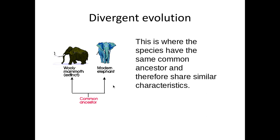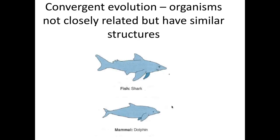We have divergent evolution, where species share the same common ancestor and therefore have similar characteristics — as seen here with the modern elephant and the woolly mammoth. We also have convergent evolution, where organisms are not closely related but have similar structures — for example, fish and mammals that both evolved to be streamlined with similar fins and movement.